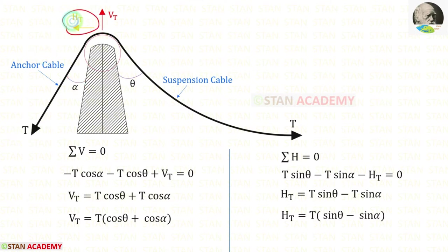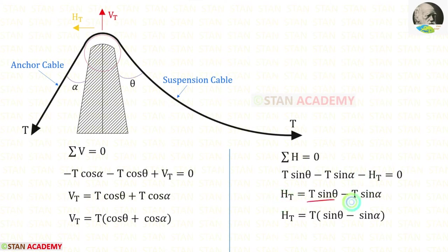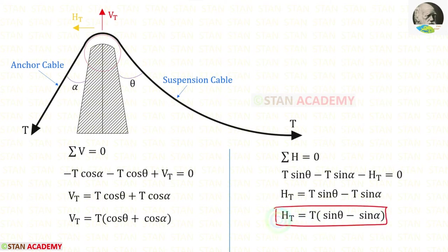Ht is acting towards the left side so it should be negative. Let us take minus Ht on the other side so it will come as positive. From these two we can take T outside. This is the expression for Ht.